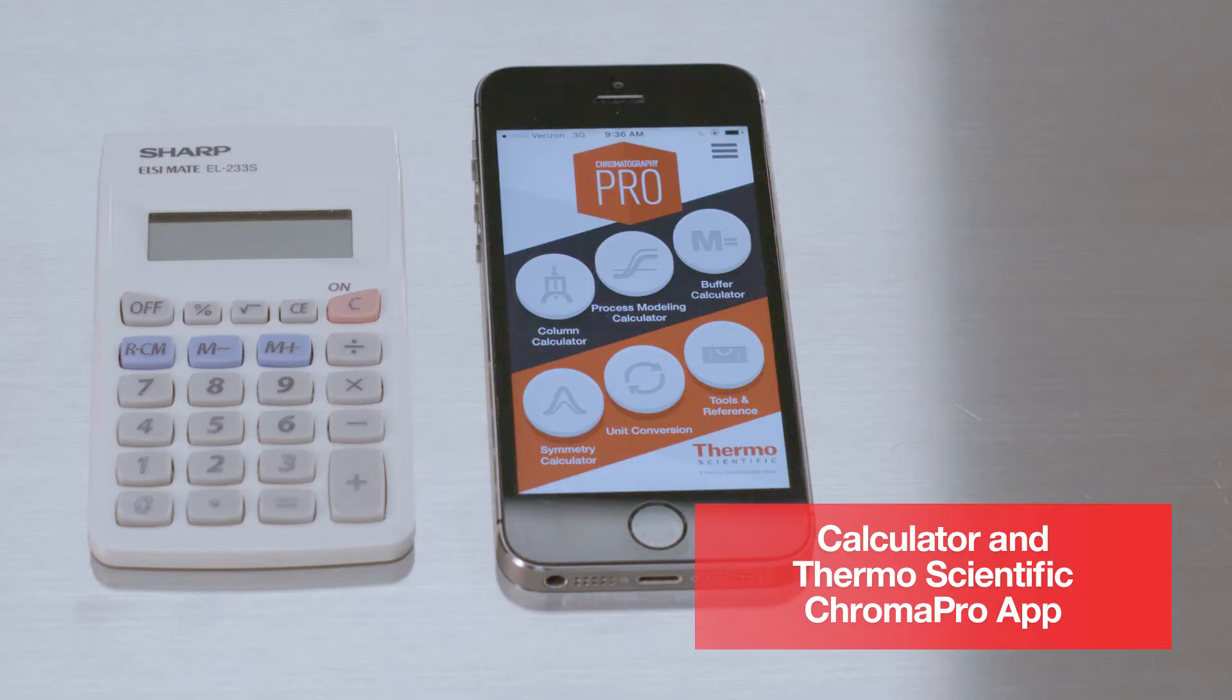Also needed: pressure gauge, three or four-way valve, paddle for re-slurrying if needed, waste collection carboy, large transparent graduated cylinder, level, laboratory tape or marker, pipette, calculator, and ThermoScientific Chroma Pro app.